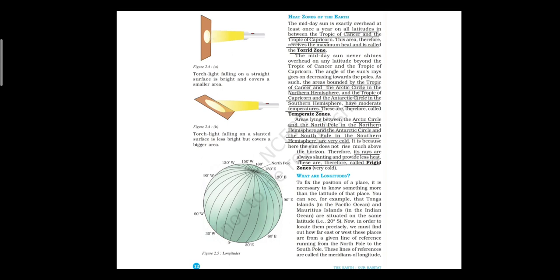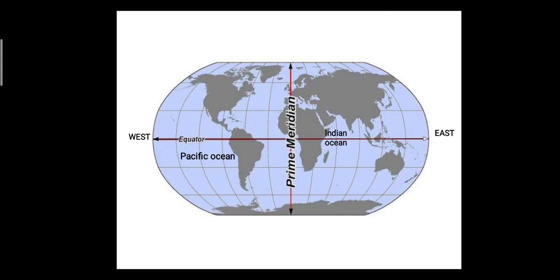The Indian Ocean is on the east side and the Pacific Ocean is on the west side. So Mauritius Island will be towards the east and Tonga Island will be towards the west. In this way, longitudes are very important to exactly locate places on the earth. To locate a place precisely, we need both longitude and latitude.